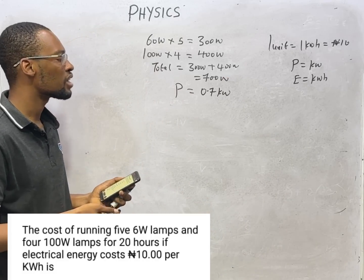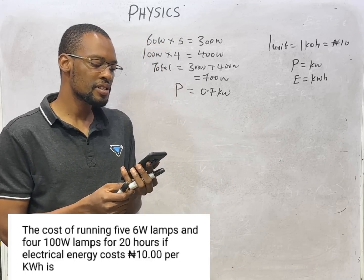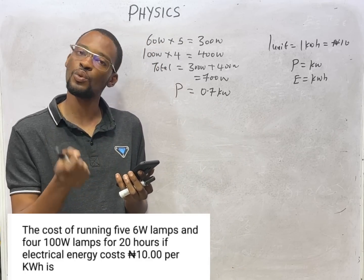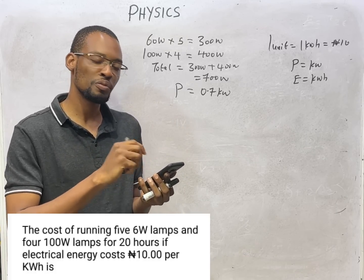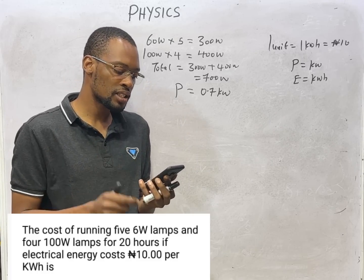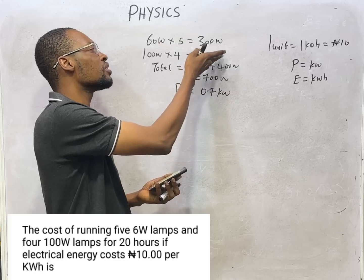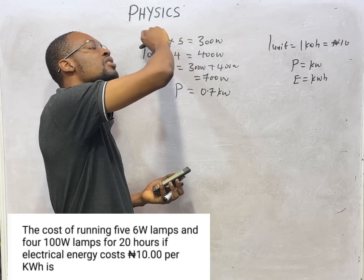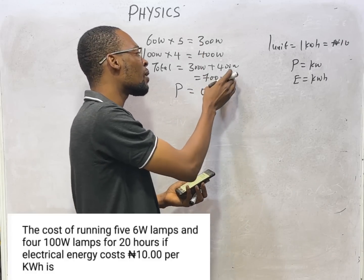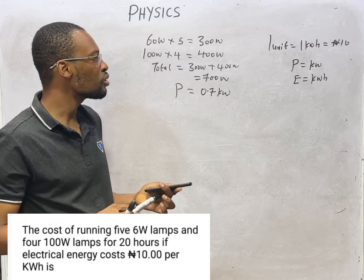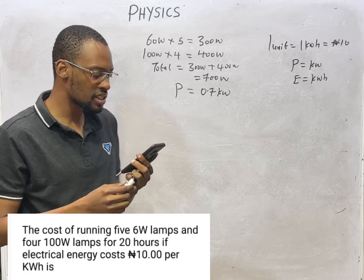Power must be in kilowatt for commercial purpose. Converting 700 watts to kilowatt: 700 divided by 1000 gives you 0.7 kilowatt. This person is consuming this power for 20 hours — time is 20 hours. Time is already in hours so we don't need to do anything. For commercial purpose, time must always be in hours.